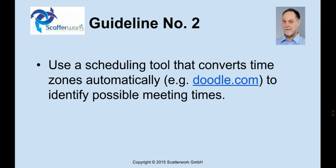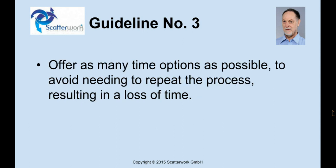Guideline number two is to use a scheduling tool that converts time zones automatically to find possible meeting times. If this is done, then the individuals get suggestions and they can read them in their own time zone. It really is not practical to send things like "are you available at this time zone," as it just takes time to check it, and if there are errors, the meeting doesn't take place.